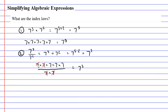Moving on to our third index law, this time we're going to see a set of brackets. We'll have 7 to the power of 2 in brackets, and then all of this to the power of 3. Now when this happens you simply multiply the powers — you go 2 times 3 — which gives us 7 to the power of 2 times 3, or 7 to the power of 6. So why are we allowed to multiply the powers when we've got one inside the brackets and one outside the brackets?